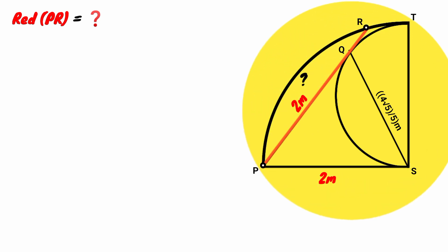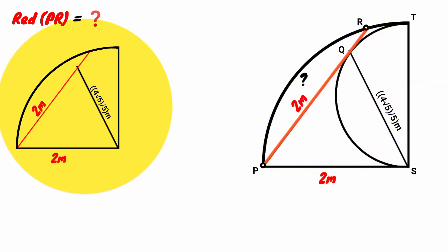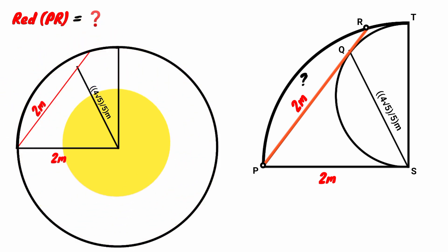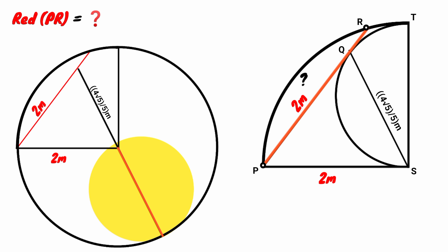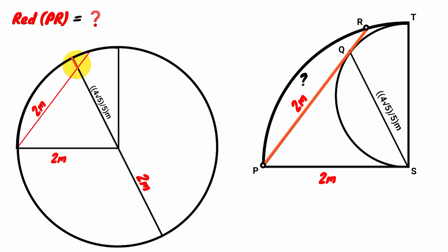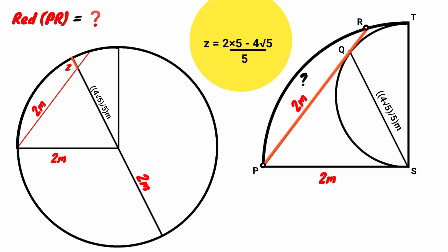Now let's extend this. The quadrant is one-fourth of a circle, so we draw the remaining three-fourths. This is the center. Extending a radius to touch the circumference gives a length of two meters. Another radius extended to the circumference is also two meters. But this part of it is 4√5/5. Therefore, the remaining segment z must be 2 − 4√5/5. Simplifying into a single fraction: (10 − 4√5) / 5.